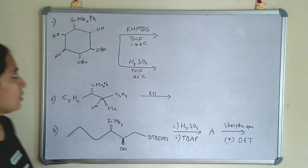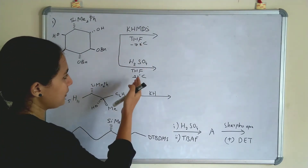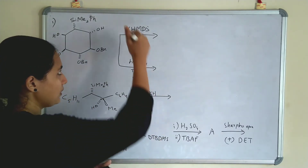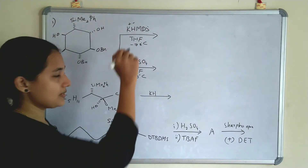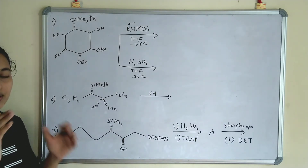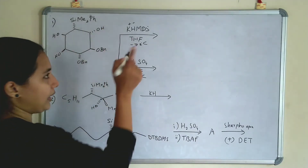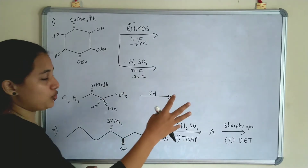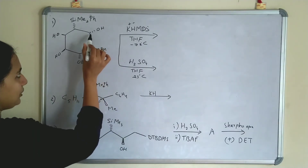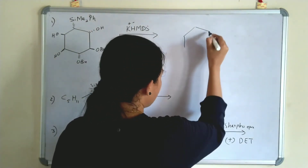Now let's do some examples. In the first example, the reagent given is KH and in the second option it is given as passive (acid). KH can be written as K⁺ and H⁻, so this is a base. When we are adding a base, the elimination should be syn-elimination. So SiNPh₂Ph and OH should be in the same (syn) position. Here SiNPh₂Ph is in the below plane and one of the OH groups is also in the below plane, so elimination can occur.